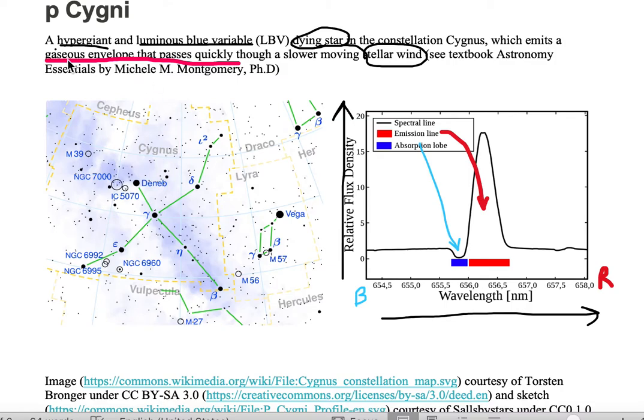Because we have this faster moving gaseous envelope that passes through the stellar wind, the stellar wind is absorbing this faster moving gaseous envelope, hence you get this absorption feature, and because it's faster moving, it's on the blue side of the spectrum.